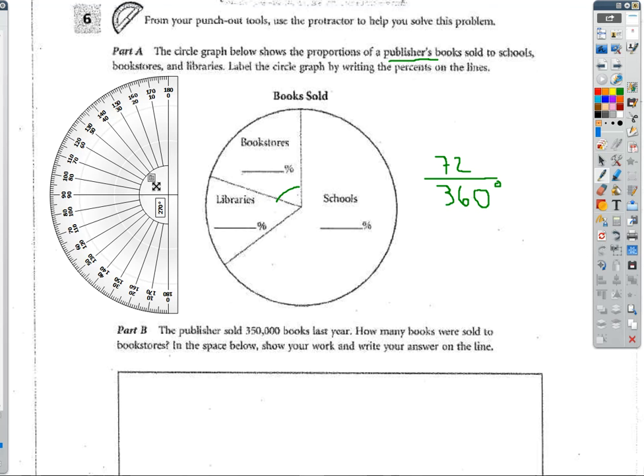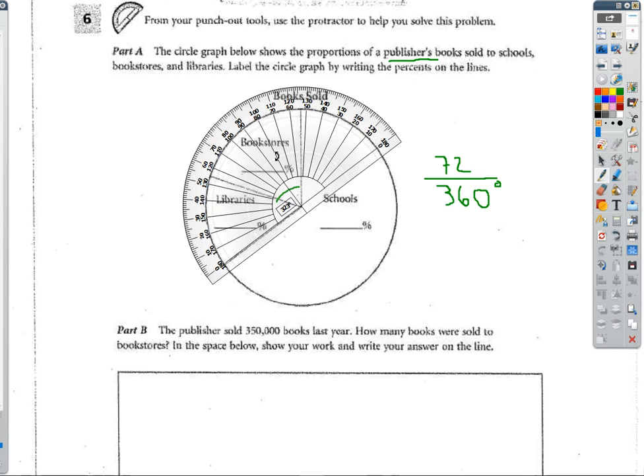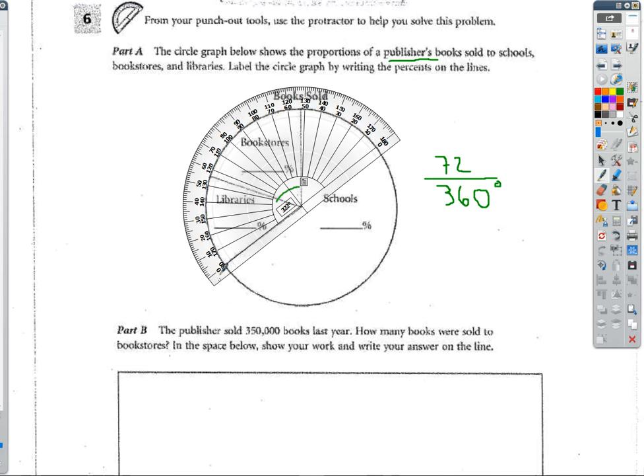And for the library, now I'm going to be using the outside numbers because this is my zero line. I am right at 50. So that will be 50/360.